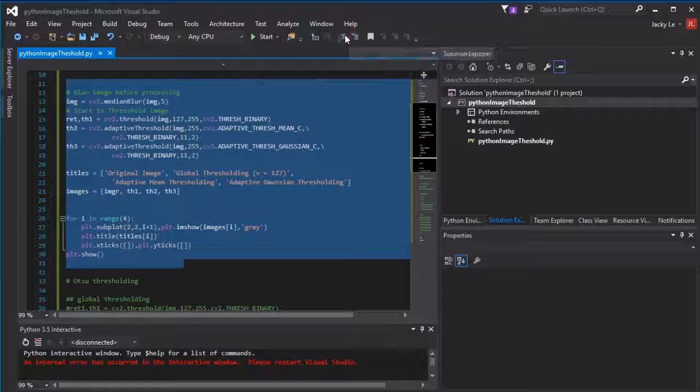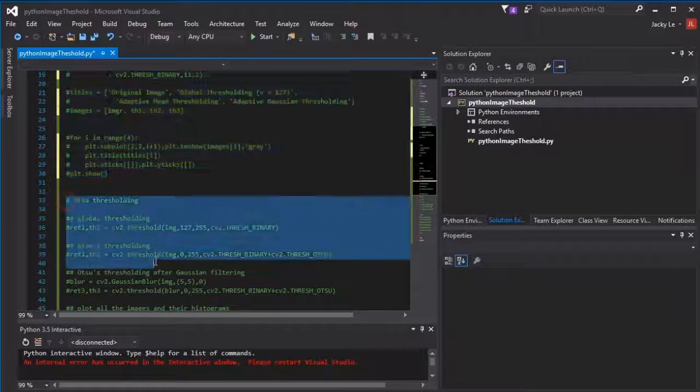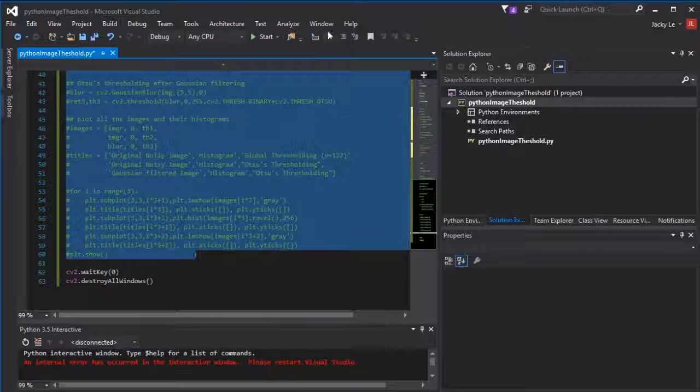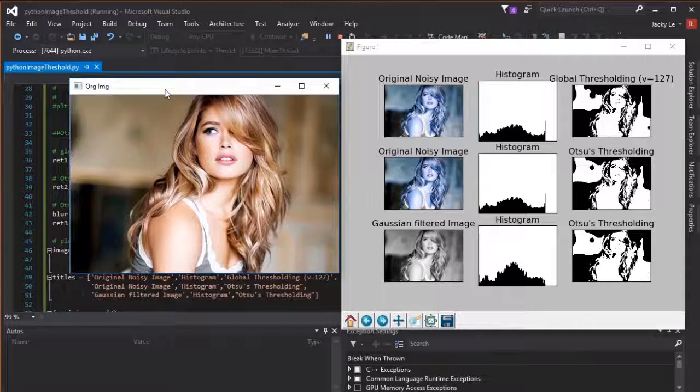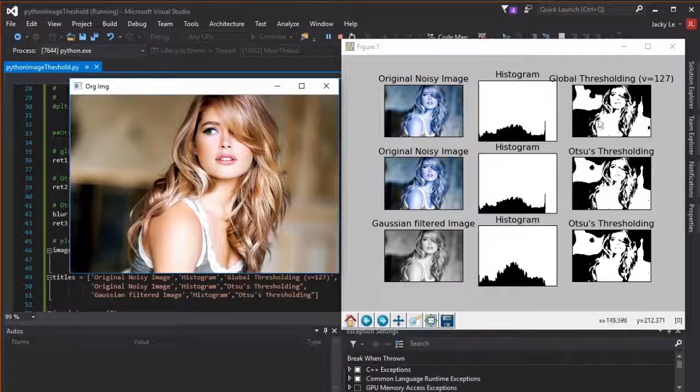Let's check the OTSU threshold method. As you can see, after using blur and OTSU threshold method, the noise filter is much better.